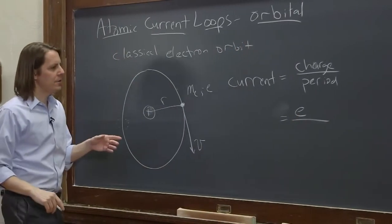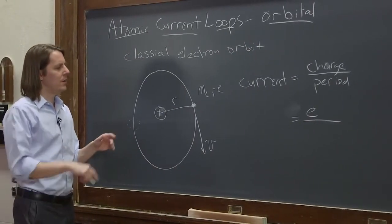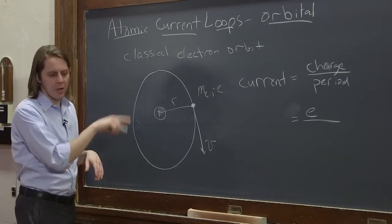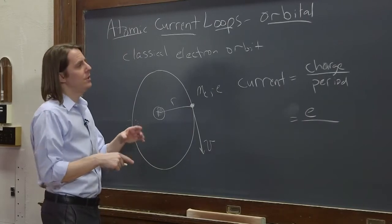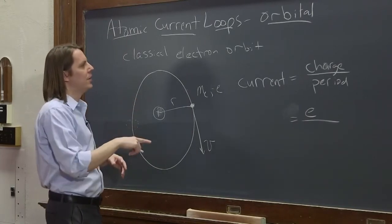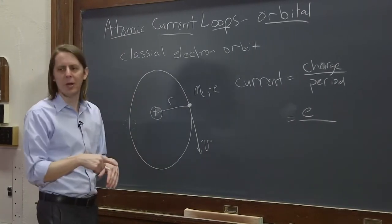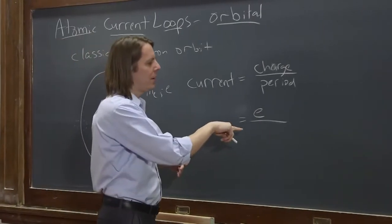And the period of this motion, well, you know it's going at some angular frequency omega. Omega would be V over R. So the period would be, let's see, omega is how many radians per second. And a full circle is 2 pi radians. So the period would be 2 pi over omega.